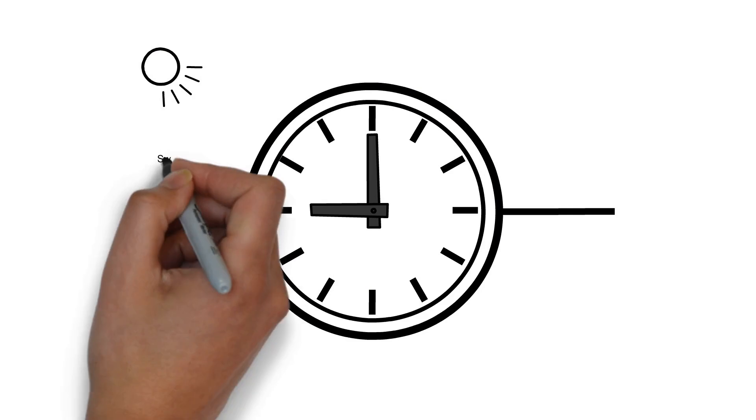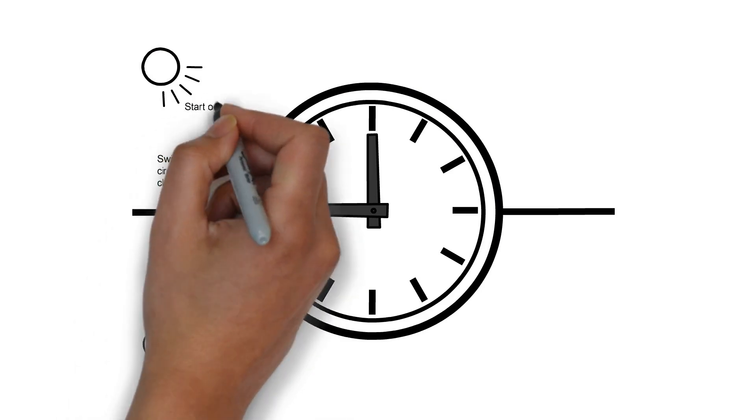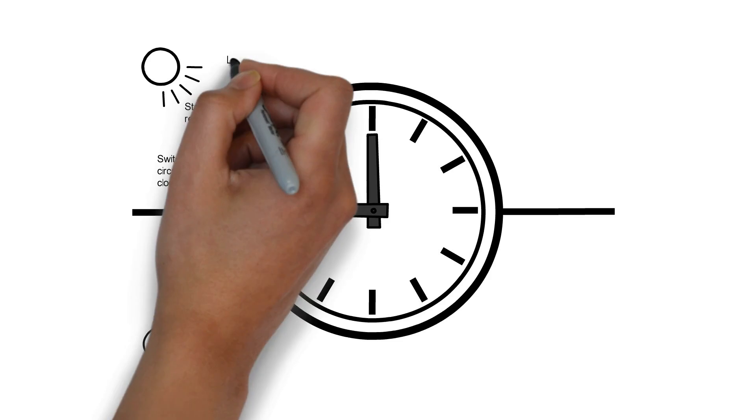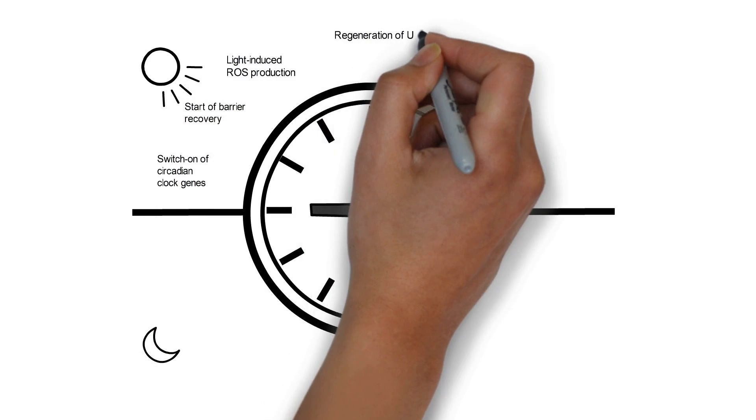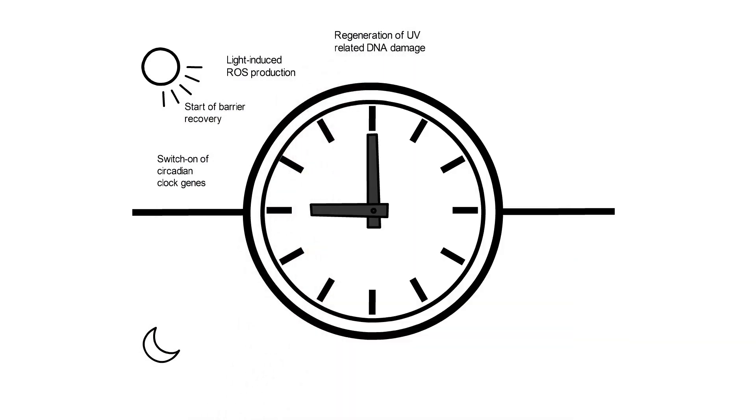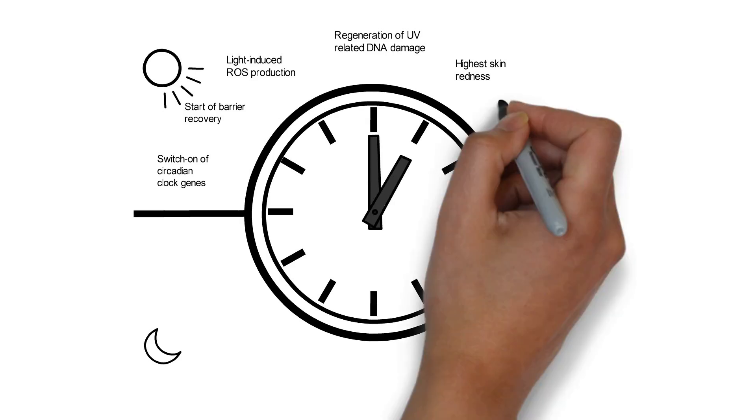In the morning, our skin switches on the circadian clock genes and starts to repair its barrier. Daylight permanently causes the production of reactive oxygen species and damages DNA, which is concurrently repaired. Light stress and elevated metabolism make the skin turn red.